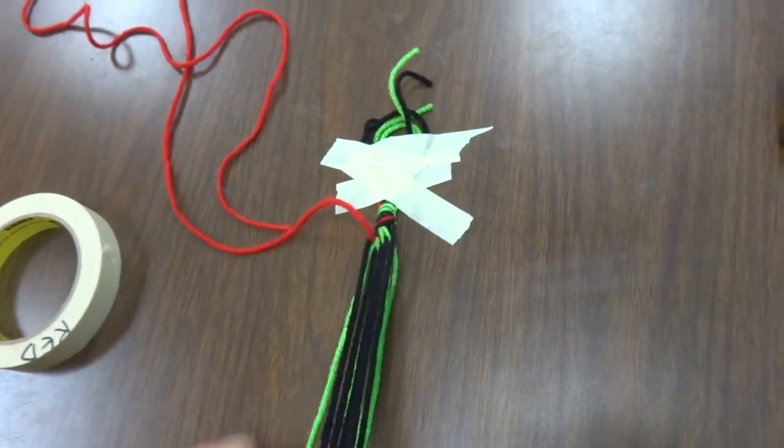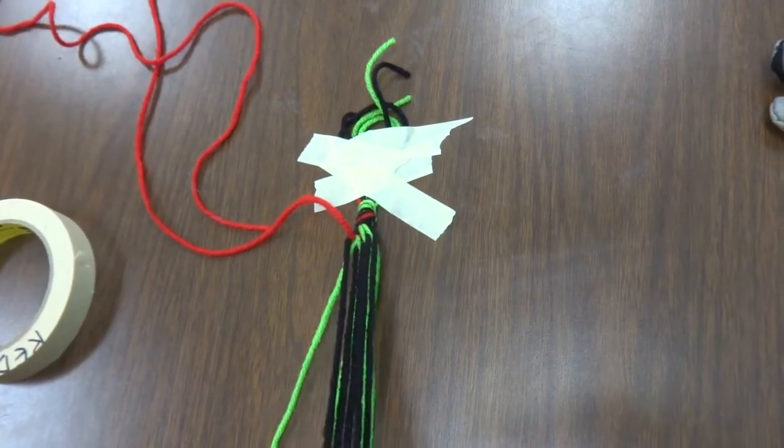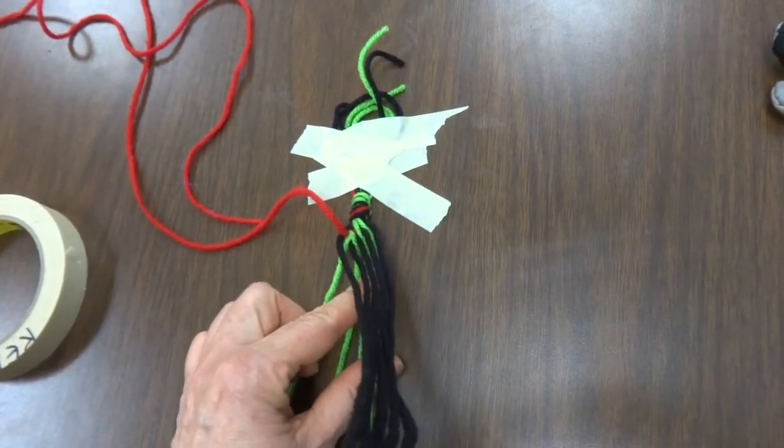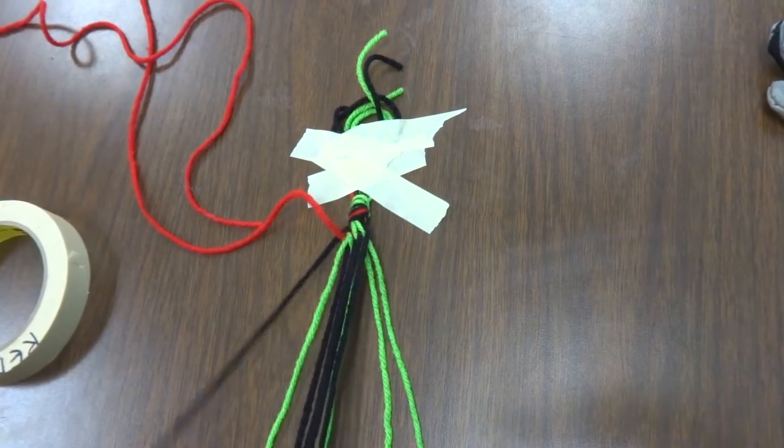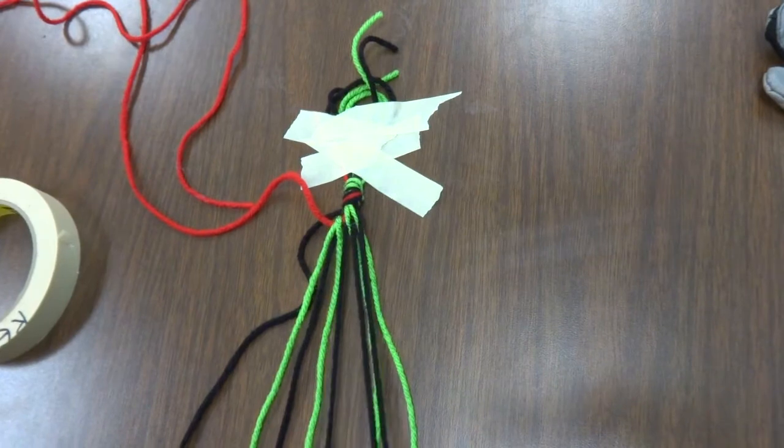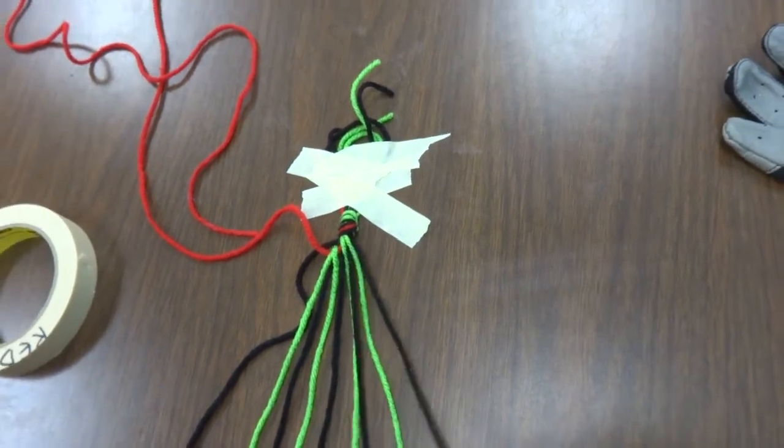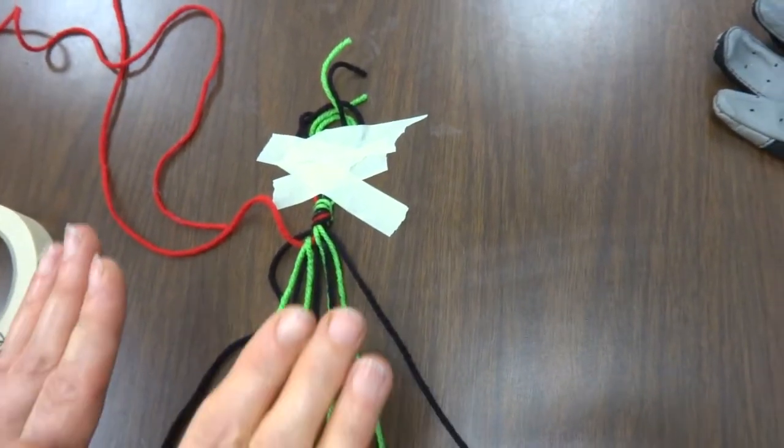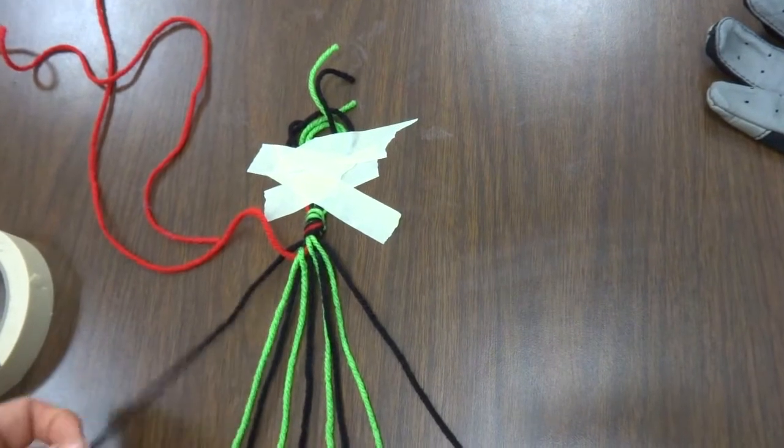The green is on the bottom. I'm going to fan it out in order, no crisscross. And the black will always go on the outside because it has the most. And there's no crisscross on that either. Go in order. The black's on the bottom, the green's on the top, so I pick up the black.